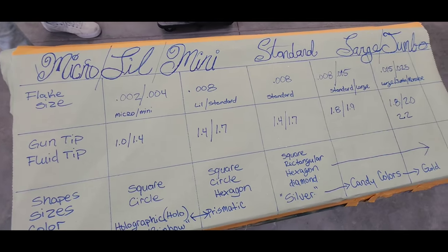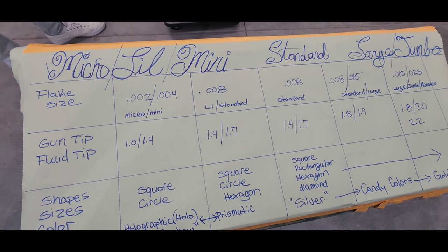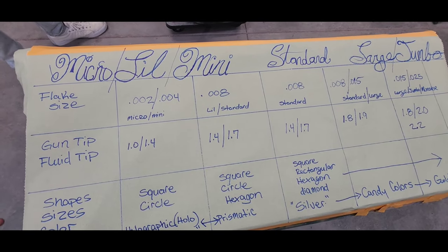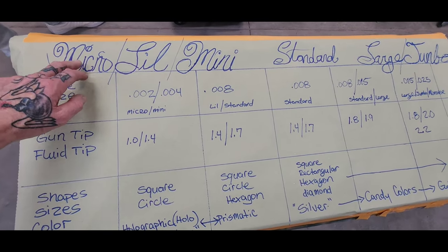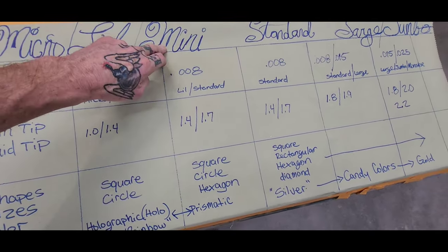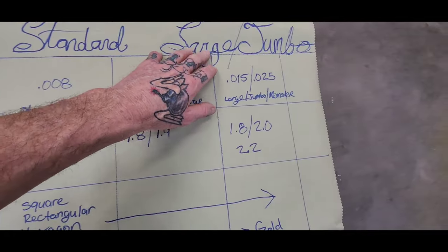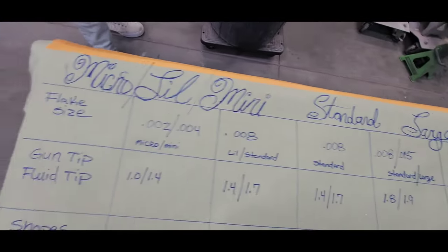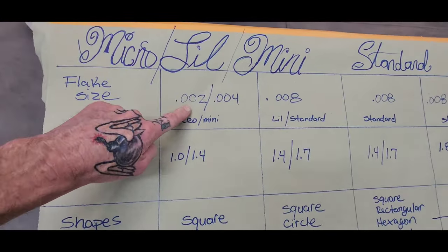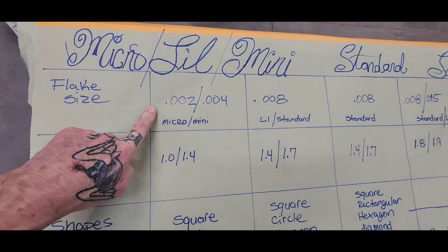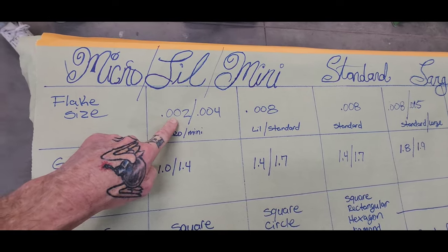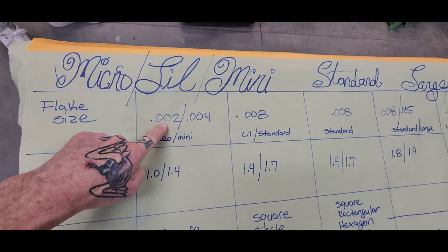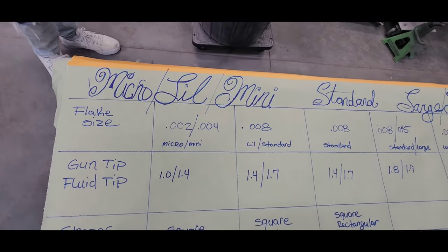When you're going to buy some metal flake and you don't understand what to do, you've got to understand that there's several different names that different manufacturers call different flakes, like you'll hear Micro, Lil, Mini, Standard, Large, and Jumbo. And those are pertaining to the size of the flake that they make. I've seen Micros, Littles, and Minis in both of these sizes. .002 is really tiny and more for airbrush flakes.